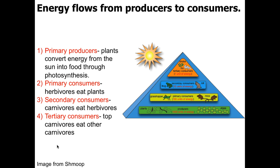Primary or first level consumers are going to be the herbivores — the organisms that eat the grass or whatever the other plant may be. Secondary consumers or second level consumers are generally going to be carnivores that eat herbivores, although they can also be omnivores that will sometimes eat herbivores and will sometimes directly eat plants themselves.